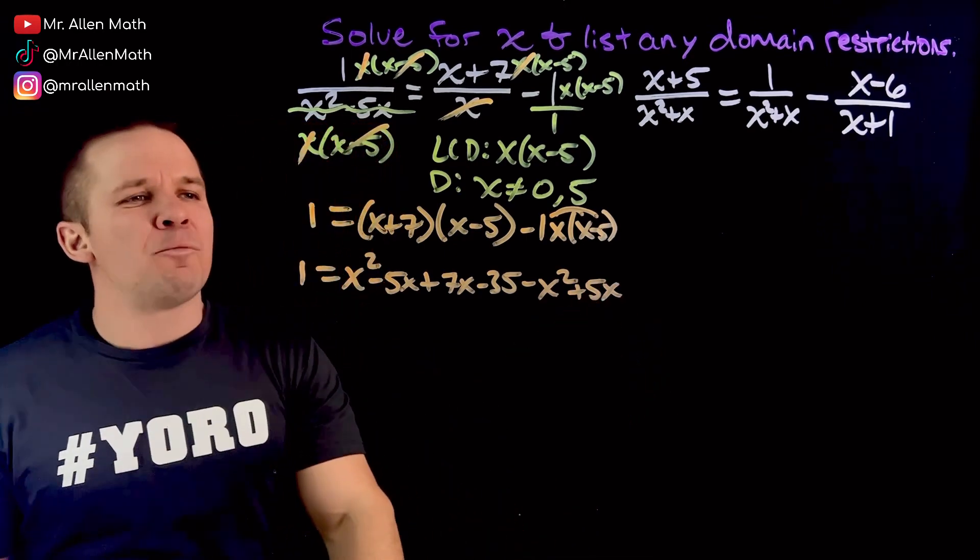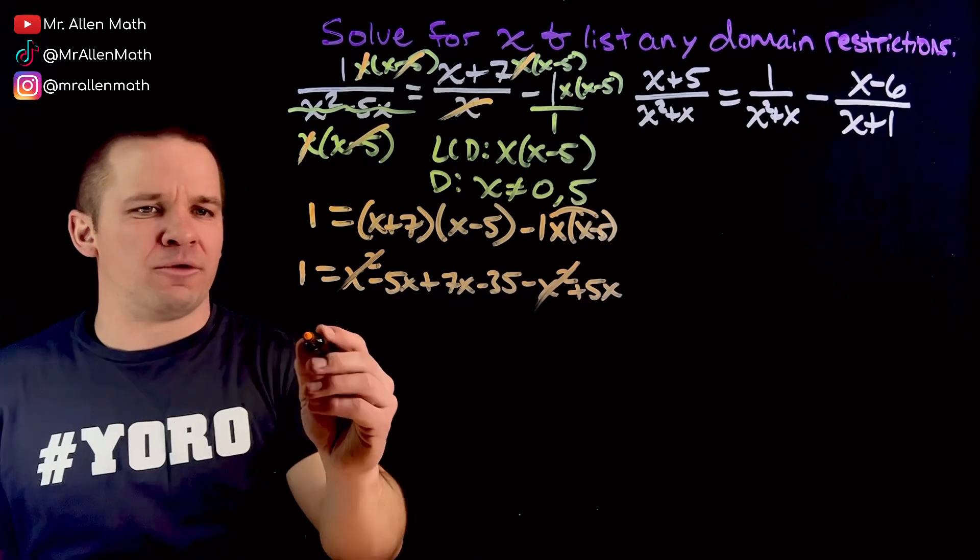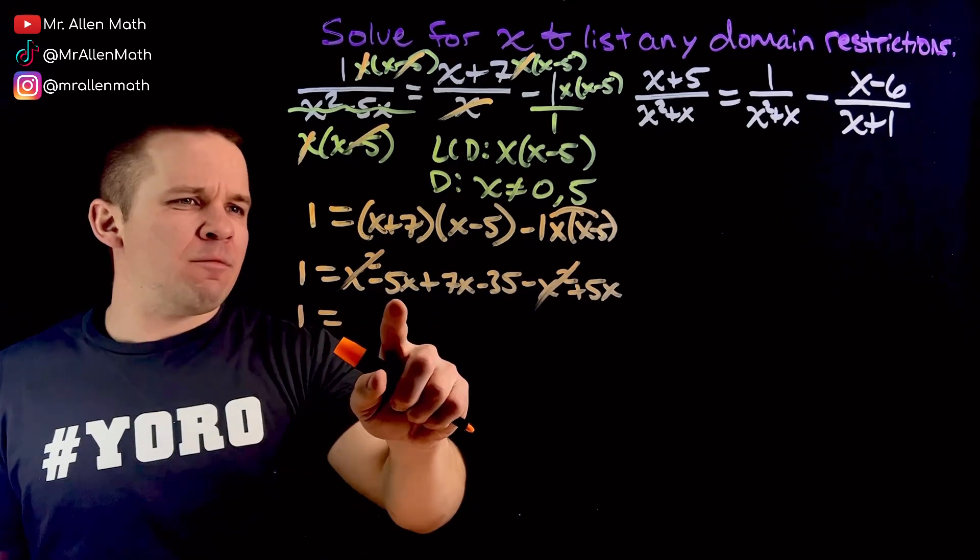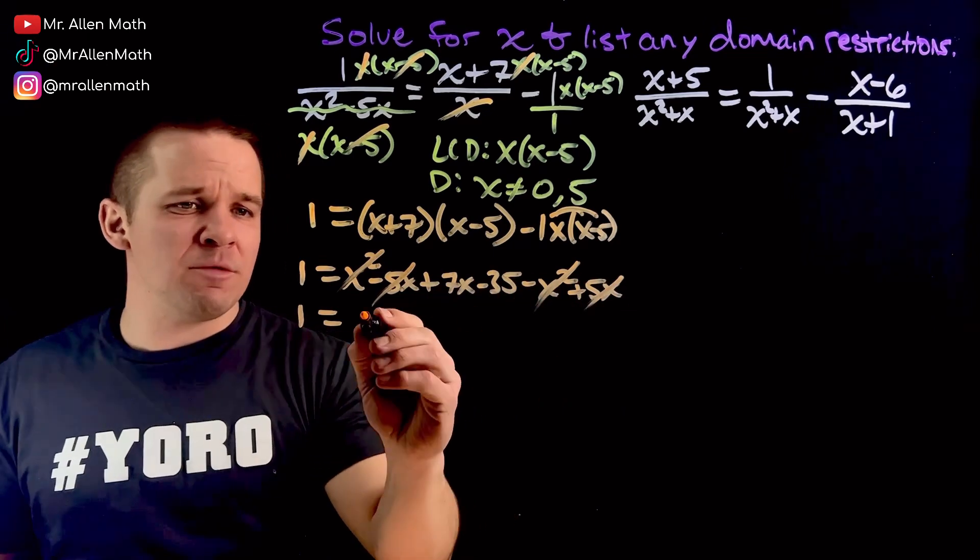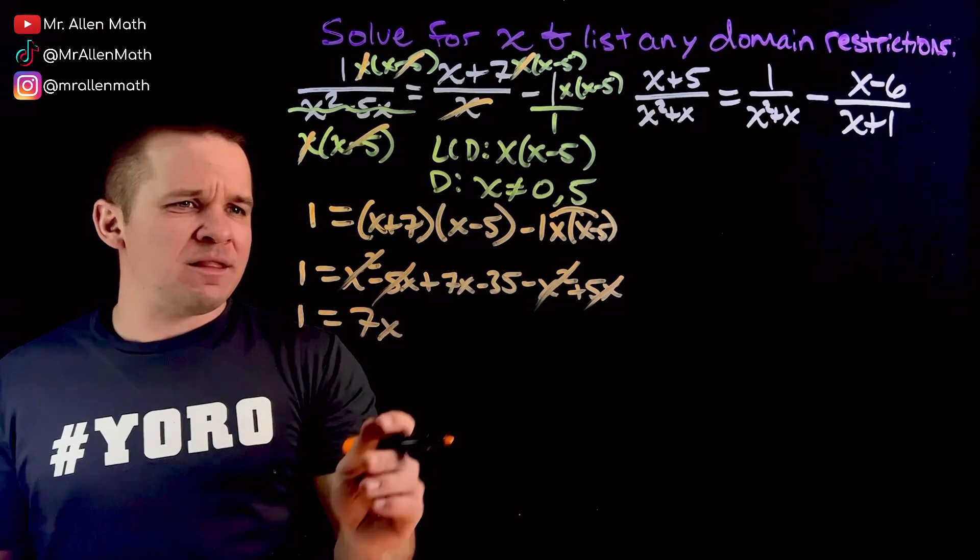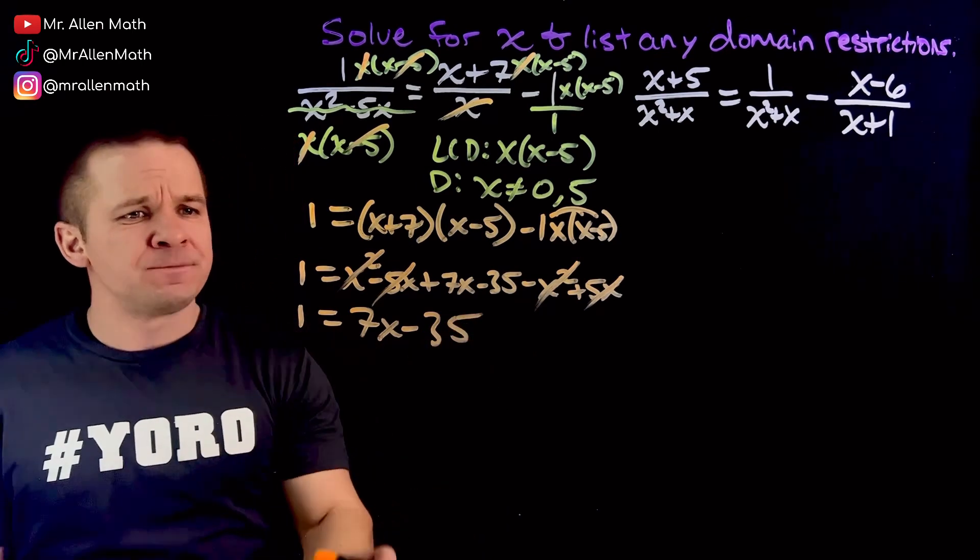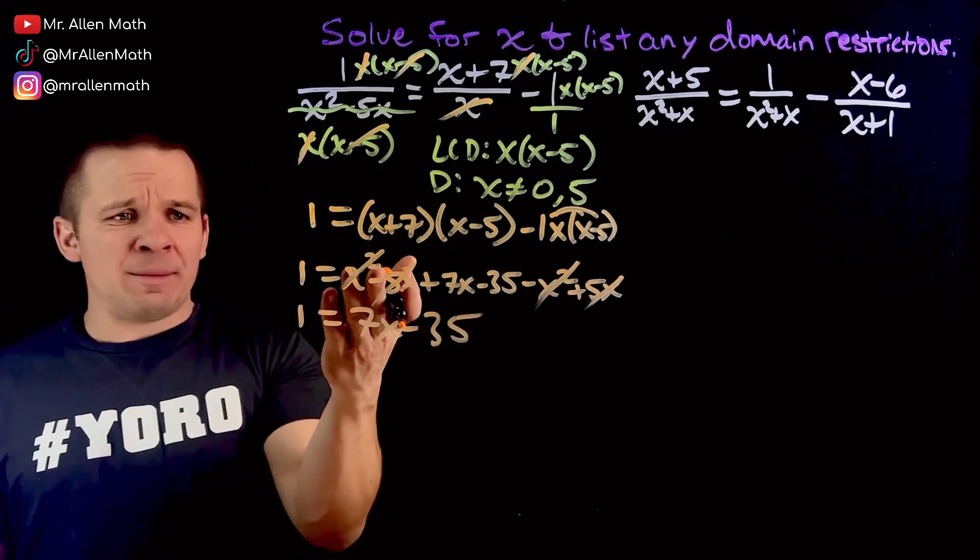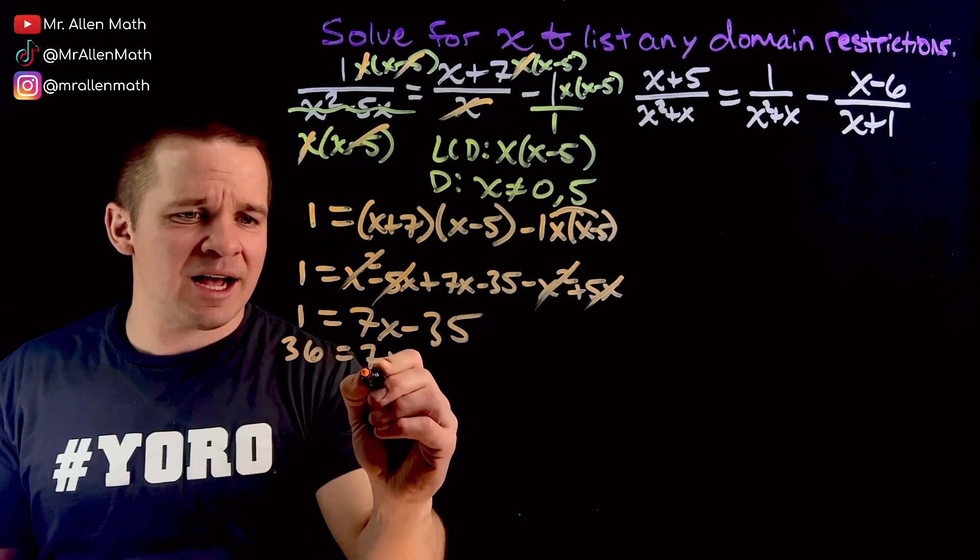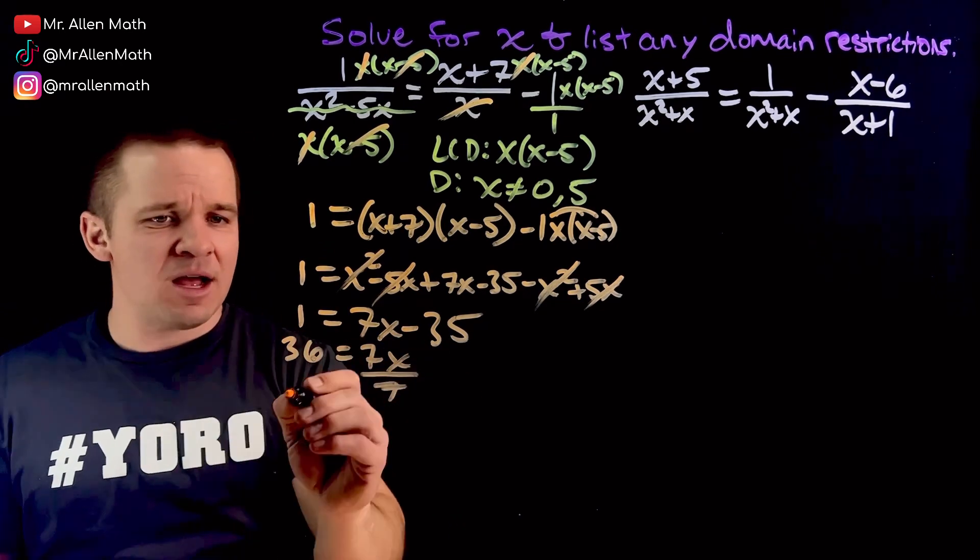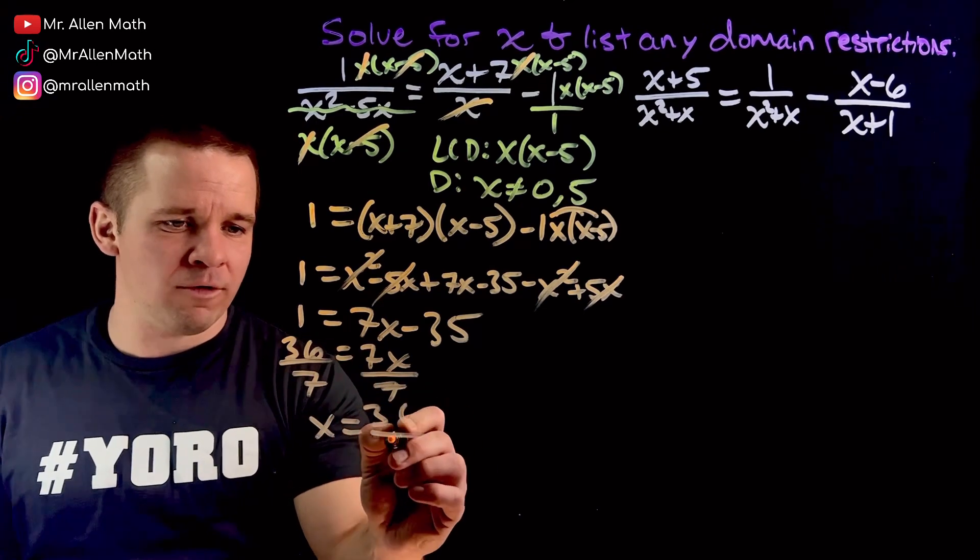And now we can go to town combining our like terms. We're going to get rid of the quadratics. That's beautiful. Equals. And then we've got, let's see here, 5x, negative 5x also gone. Leave me with just the 7x. And then it looks like just the negative 35 there. That's pretty dope. So I'm going to add 35 over. I get 36 equals 7x. And when I divide by 7 here on both sides, I get x equals 36 over 7.